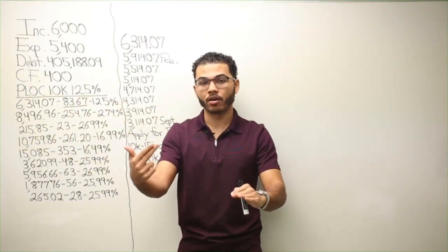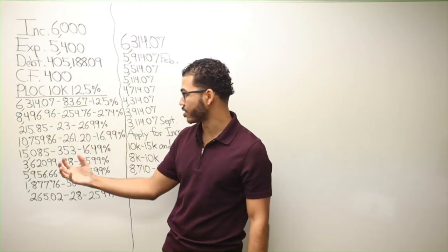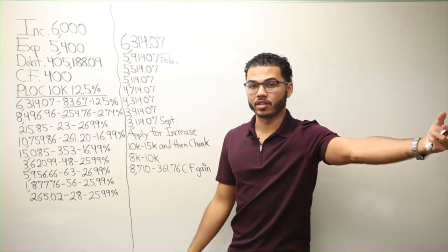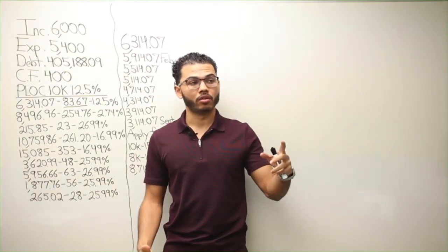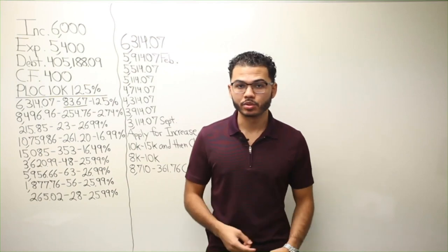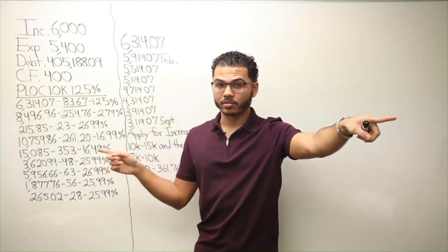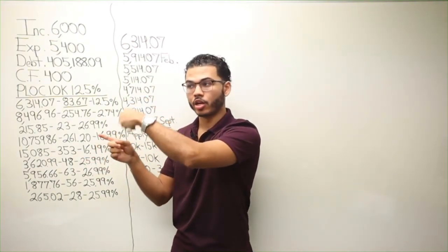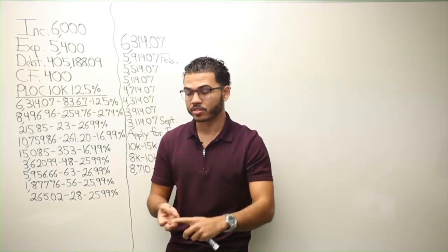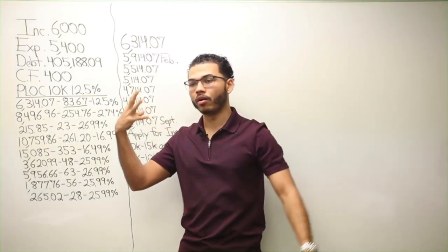If an emergency goes down in month three of your velocity banking method, you would have access to cash — no different than having money in a savings account. Some would say, 'Well if I had a savings account I wouldn't have to borrow and go into more debt.' That is true. But on the other side of the coin, we could have had that same money working for us in the line of credit to bring down our chunking faster and save more money on interest.